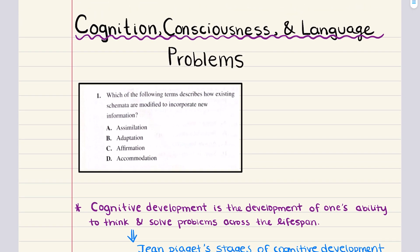Adaptation is too broad of an answer because it includes both assimilation and accommodation. Assimilation is incorporation of new information into existing schemas. If the new information doesn't fit though, then accommodation occurs, which is the modification of existing schemas to account for new information. That fits exactly into what this problem is asking. So the correct answer here is going to be accommodation, which is answer choice D.